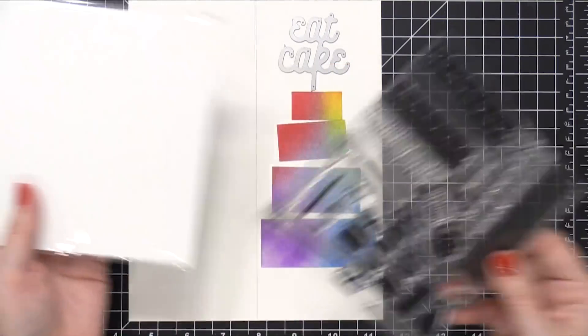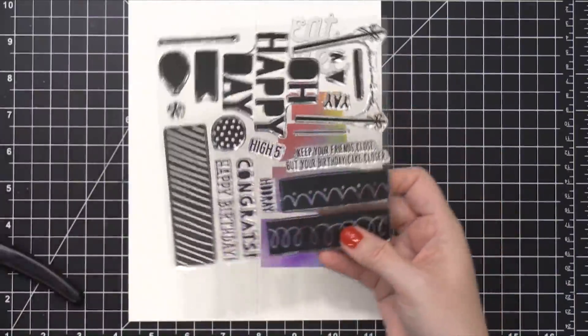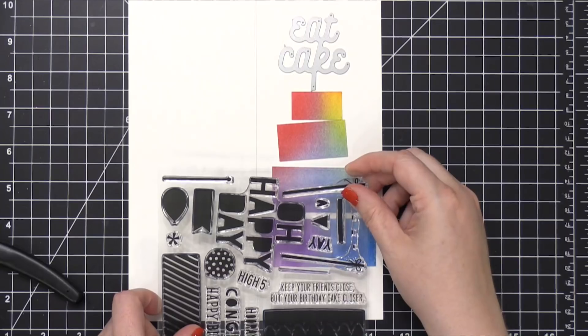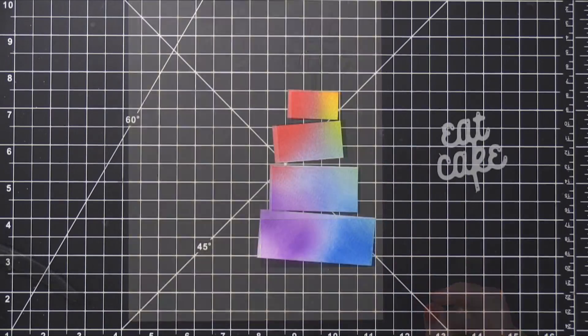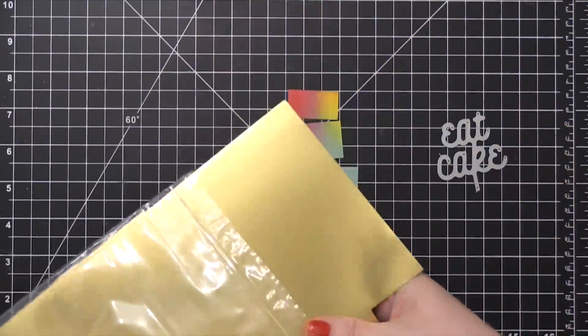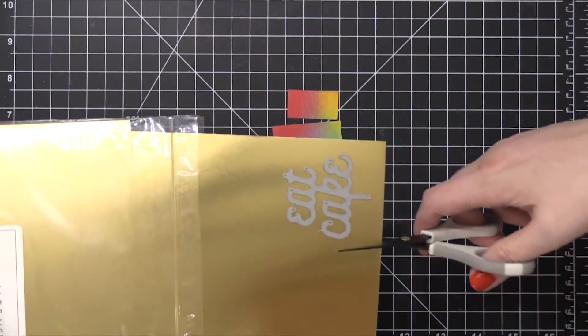Then using some dies and stamps from Concord & 9th. If you want to know the specific ones, make sure you check out the supplies that are listed below. I'll have links over to stores where you can buy them as well.